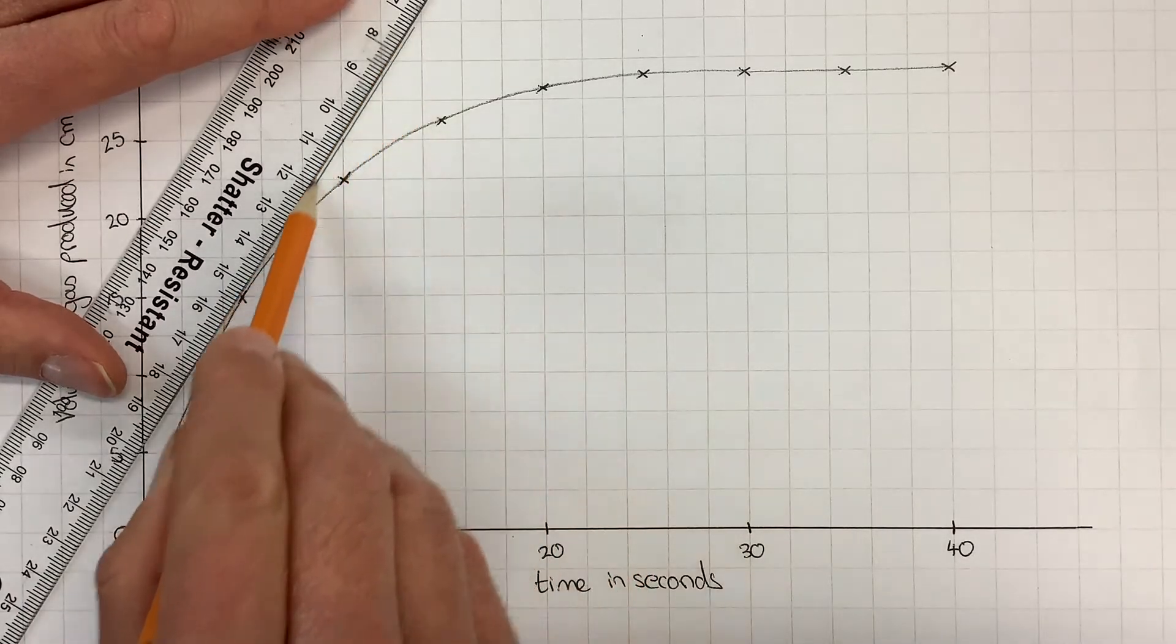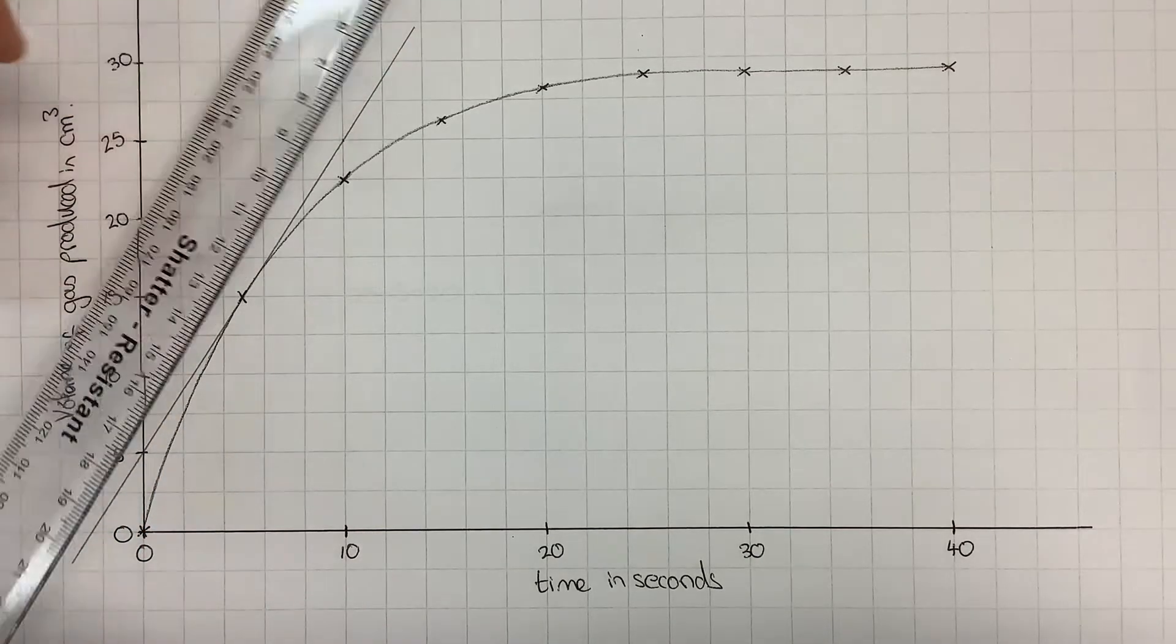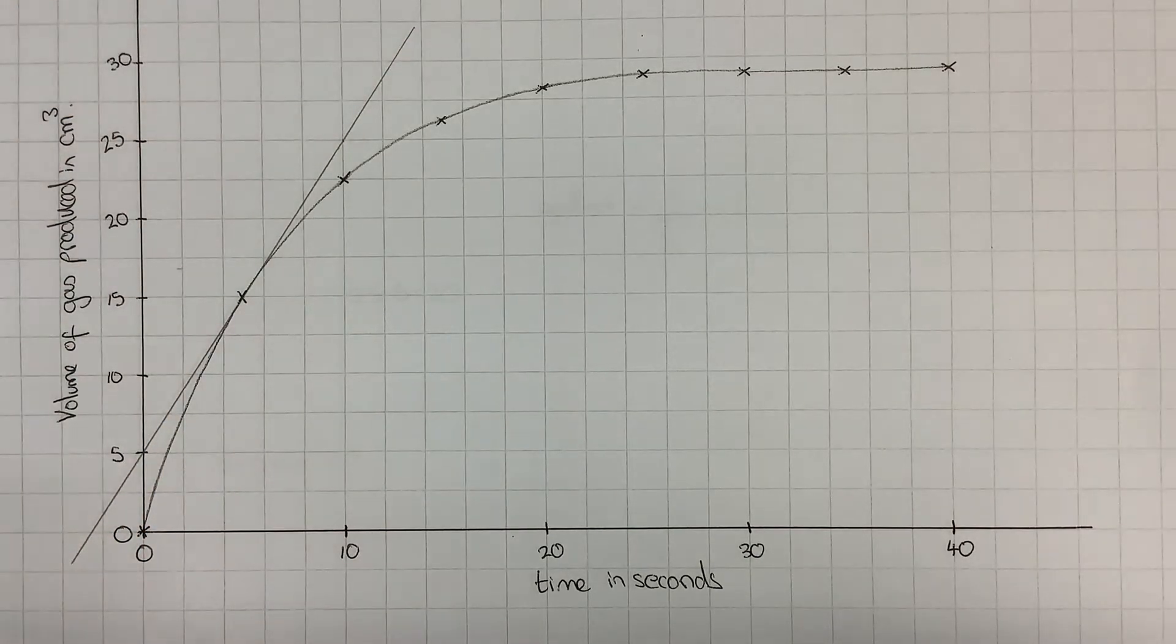That looks roughly okay. I'll draw in my line, and once I've drawn in my line, then it's the same way that you would find a gradient of a straight line graph from there on in.